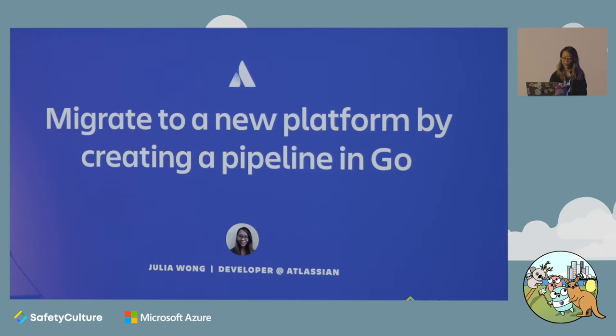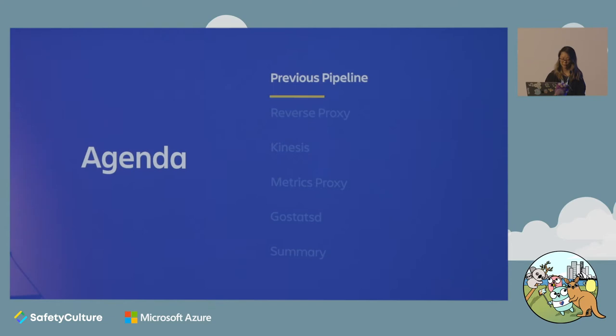Late last year, we decided to switch vendors for our monitoring system, and to help us do that, we built a pipeline using Go. I feel like switching vendors is a common experience across many companies, and it's something you yourself might need to encounter in the future. So today, I want to share our experience in how we approached the problem, where Go made this easy, and what we learned from it.